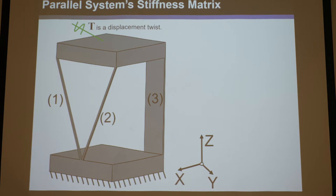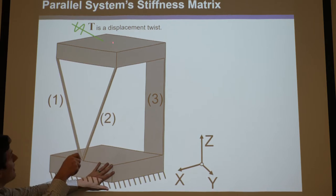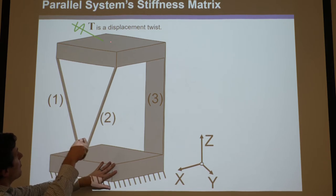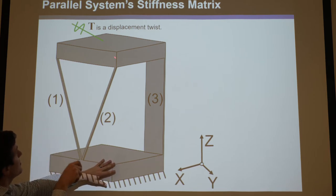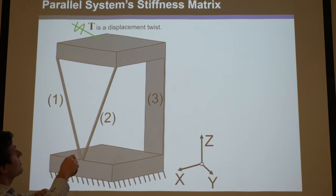Displacement twists can be visualized as lines of action — drawn in green because it's a screw of any pitch. If the pitch was zero, it would be a red rotation. If the pitch was infinite, it would be a translation. You could visualize how this stage, if grounded on one end, would translate in a direction as it rotated around the green axis. If red, you'd imagine it purely rotating; if a black arrow, translating in that direction.